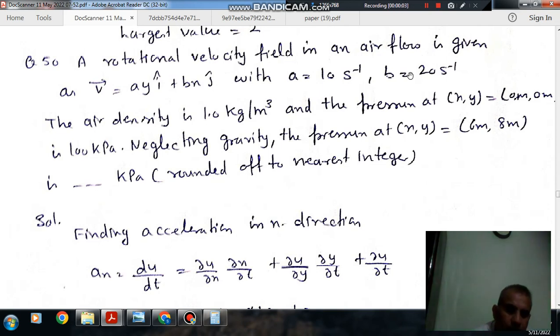Hello, welcome again. We are solving GATE 2022 aerospace engineering paper. Question number 50: A rotational velocity field in an airflow is given as vector V equals AYi plus BXj, with A equals 10 per second, B equals 20 per second. The air density is 1.0 kg per meter cubed and the pressure at (0,0) is 100 kPa. Neglecting gravity, the pressure at (6,8) meters is dash kPa, rounded to the nearest integer.